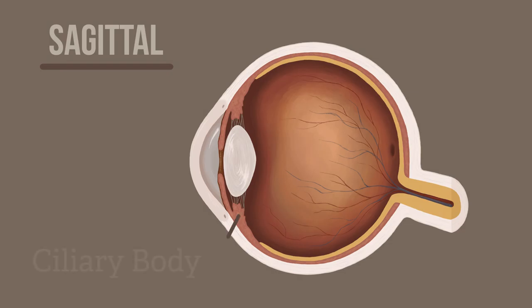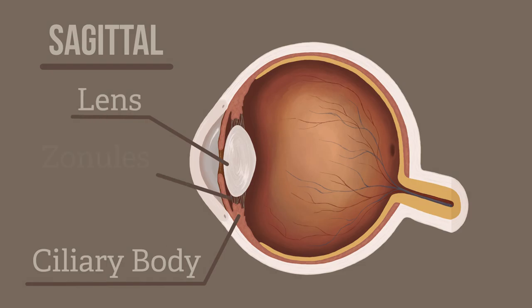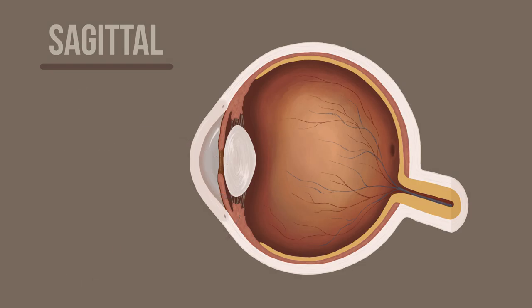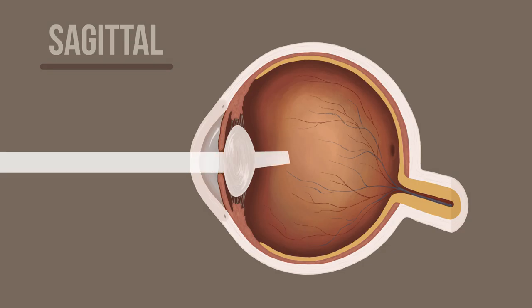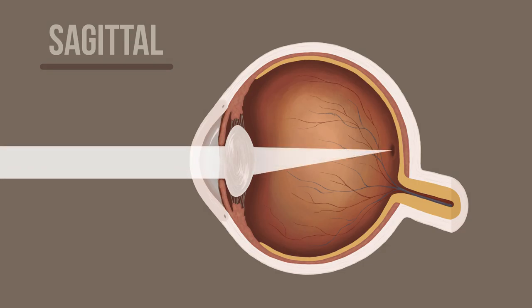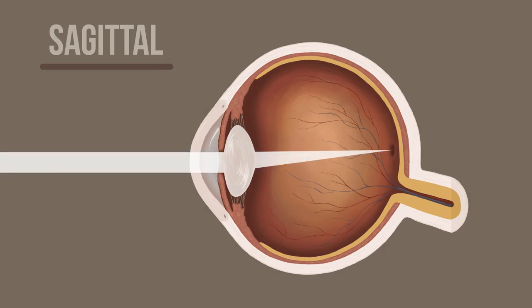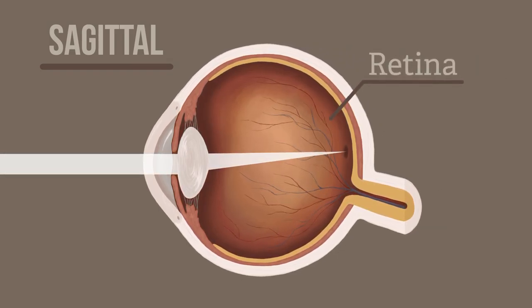These muscles are called the ciliary body. They are attached to the transparent lens by thin fibrous zonules. As light enters through the cornea, the iris changes the size of the pupil to allow more or less light to enter, which then passes through the lens into the retina. The retina is sensitive to light, sending nerve impulses to the brain via the optic nerve, allowing us to form an image from what we are seeing.